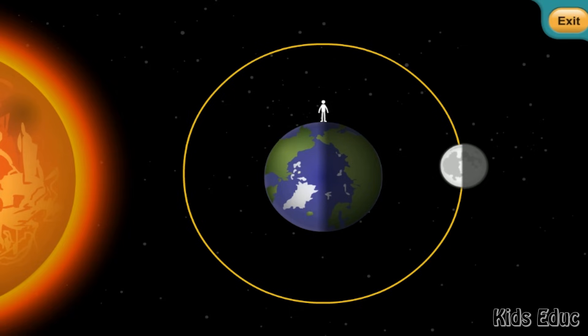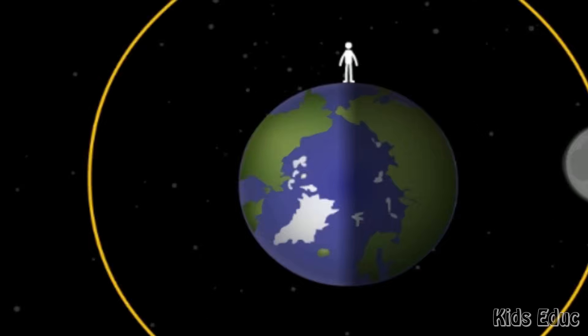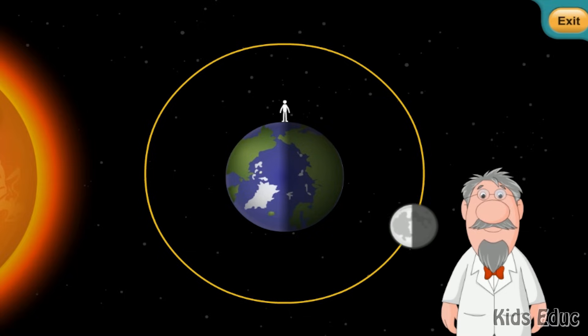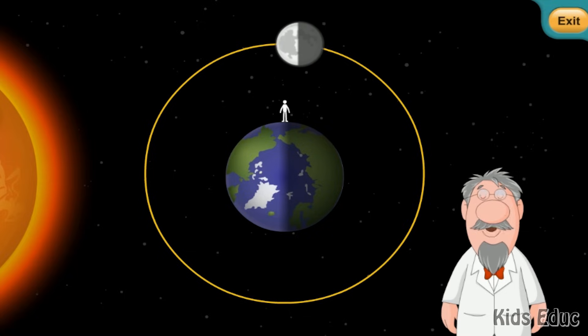When the moon is on one side of the earth and the sun is on the other, we see one half of the moon that is bright with sunlight. This moon is called the full moon because we see a full round circle. Each of the positions of the moon in orbit has a name. Let's look at what they are.